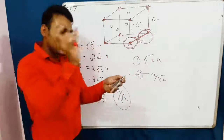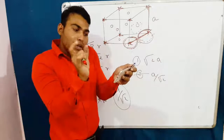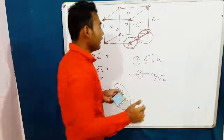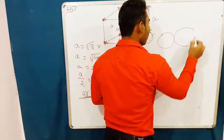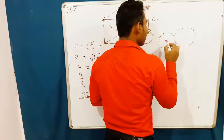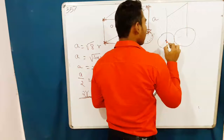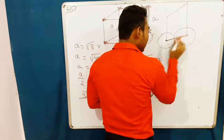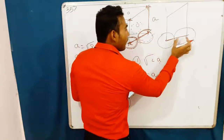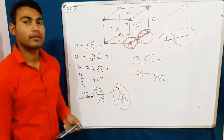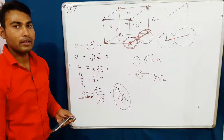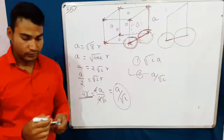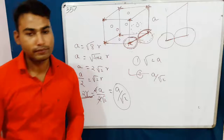So the closest approach between two atoms in a metallic crystal will be A by root 2, which is twice of R. If you have any doubts about solid state, please leave them in the comments and I will address them.